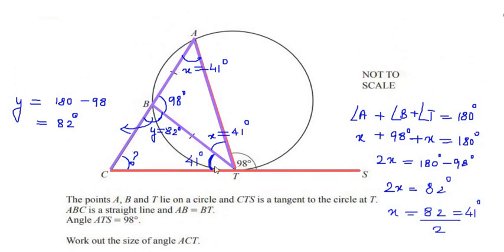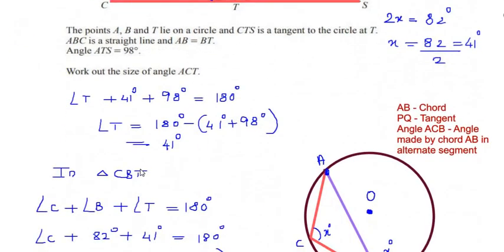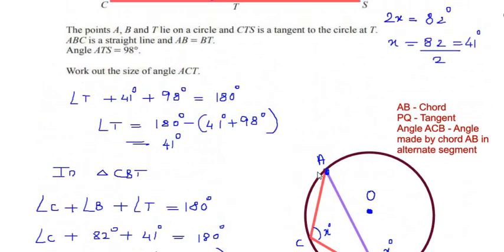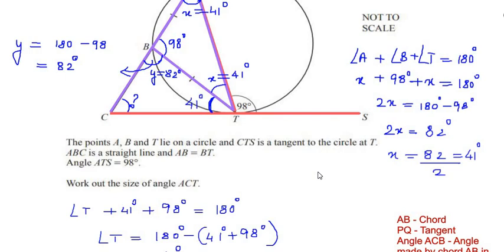So angle ACT equals 57 degrees. This is how we find angles using circle theorems. I hope you have understood and liked the video — if you are liking my videos, please like, share, and subscribe to my channel. Thanks for watching.